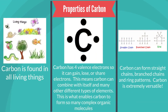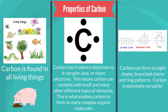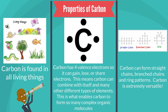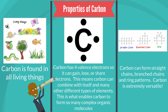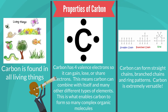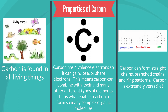First of all, carbon is found in all living things — it doesn't matter if it's a tree, a bird, an apple, some grass, an earthworm, or a fish; carbon is found in all of these things. Second, carbon has four valence electrons so it can gain, lose, or share electrons. This means carbon can combine with itself and many other different types of elements, which enables carbon to form so many complex organic molecules because it's so flexible in what it can bind and combine with. And third, carbon can form straight chains, branch chains, and ring patterns, so carbon is extremely versatile.